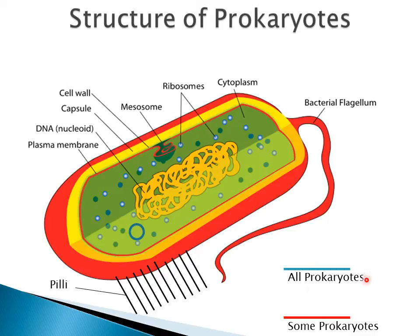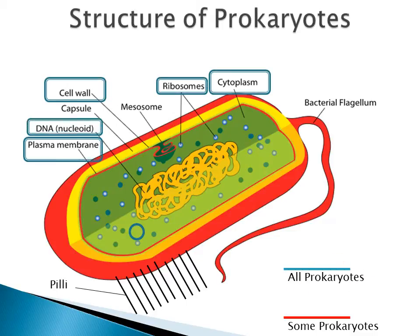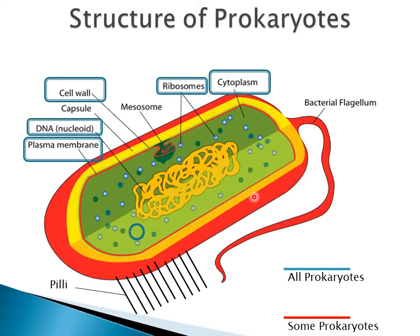Let's start with organelles common to all prokaryotes. They are the cytoplasm, the ribosomes, the cell wall — and the cell wall is different from the plant cell wall, as you will see in a minute — the DNA, which in prokaryotes is called the nucleoid. It's very clear that the DNA is naked and free in the cytoplasm; it's not protected within a nucleus like in eukaryotes. And the plasma membrane, which is similar and common to the eukaryotic plasma membrane that we know of.